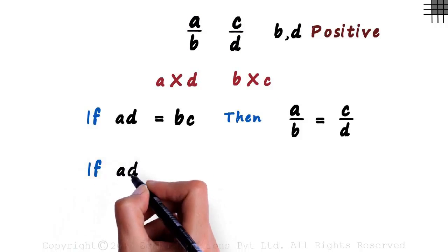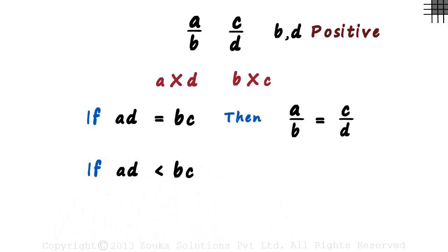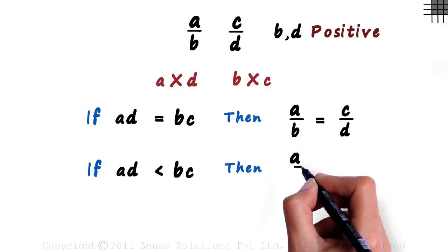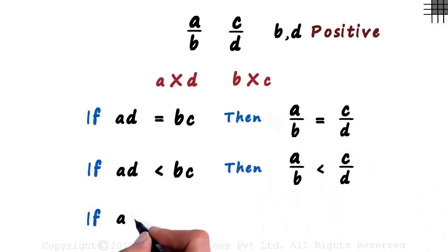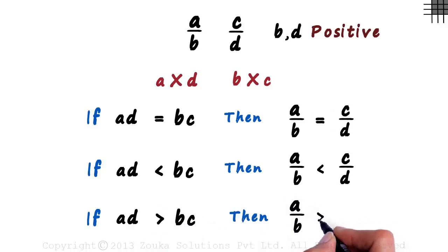But what if AD is less than BC? Simple! Then A by B will also be less than C by D. And if AD is greater than BC, then A by B is greater than C by D.